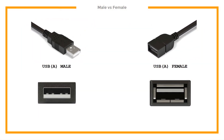USB cables have male and female connectors. A male connector, shown on the left, is commonly referred to as the plug and can be identified by its protruding nickel or copper connector. A female connector, shown on the right, is commonly referred to as the port or jack. It can be identified by its recessed connector.